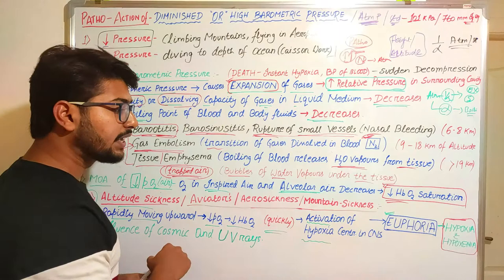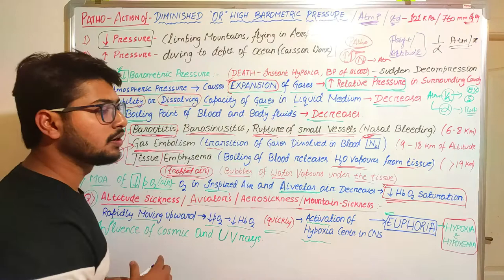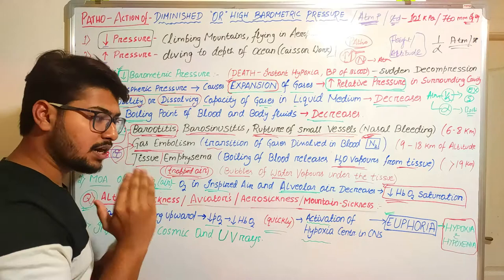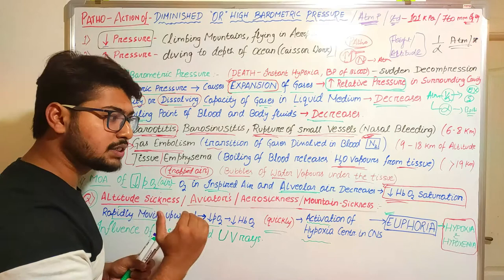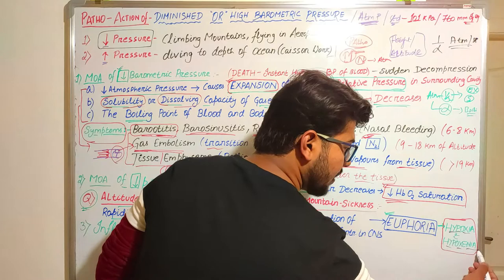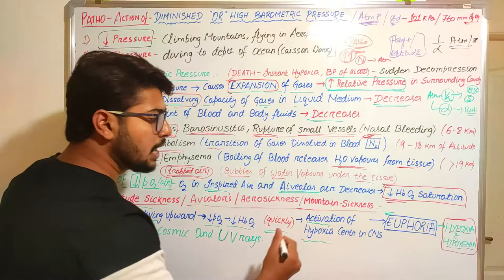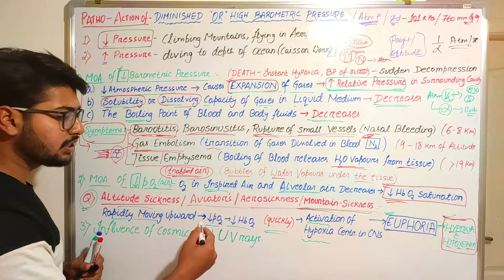Finally, when the body cannot obtain enough oxygen from the surroundings, it will fall into hypoxia and hypoxemia condition. Hypoxia means less amount of oxygen present in the surroundings or in our environment. Hypoxemia — ending with 'emia' — means less amount of oxygen present in the blood. Hypo means less, oxia means oxygen, and emia means blood. These two conditions arise in mountain sickness disease, and explaining their mechanism is an important exam question.